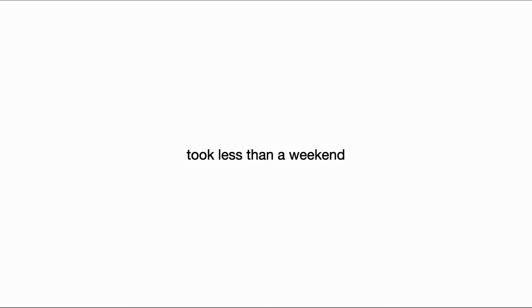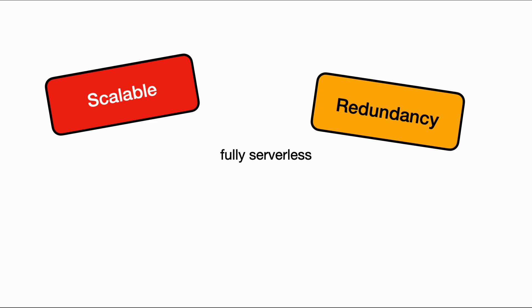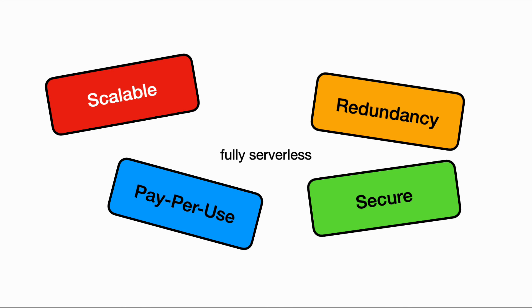I built the initial version of this system in just over a day, and the analytics tracking and graphs were added afterwards — maybe another day's work. The system is fully serverless, so it can scale when needed, has multi-AZ redundancy, and I only pay for my functions when they run. The system is secure because AWS manages all the underlying infrastructure from physical servers to the EC2 instances my code ultimately runs on. For the foreseeable future it's likely going to be free since I'm well within the free tier for all the services used.